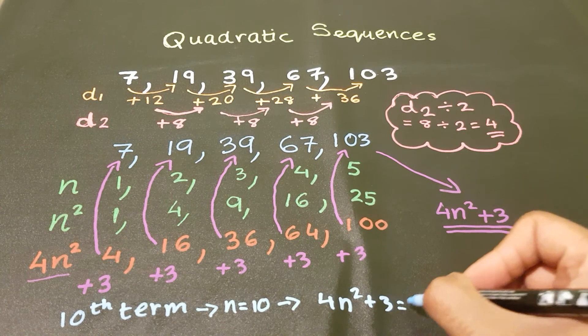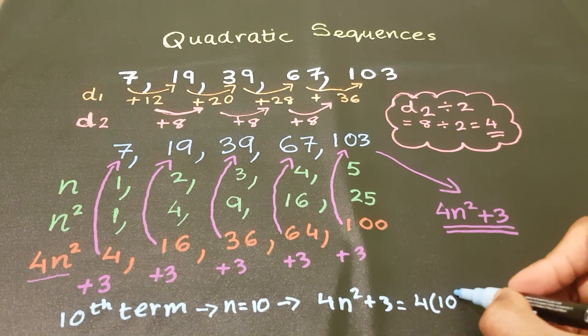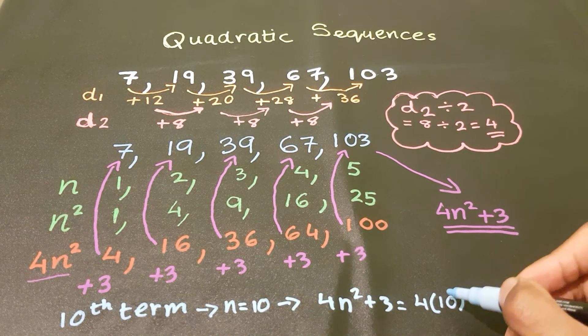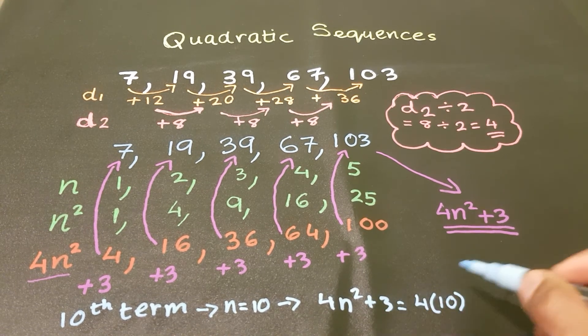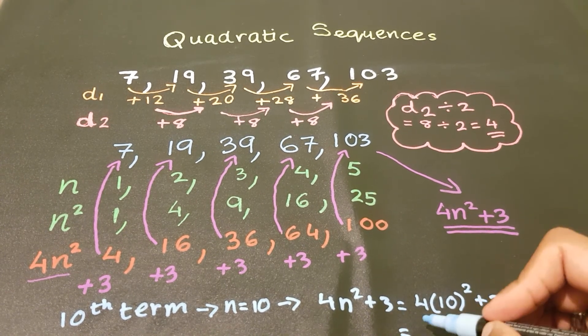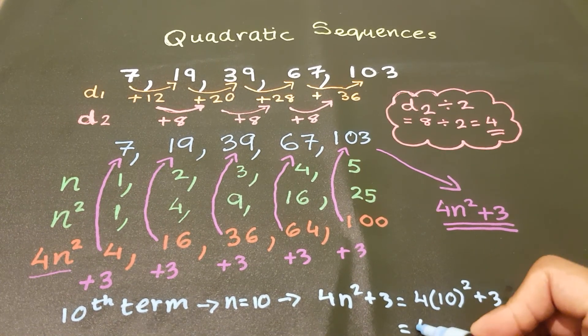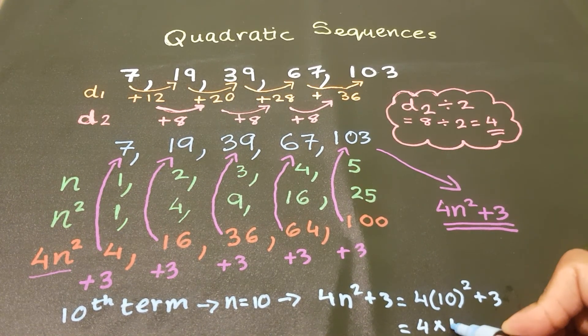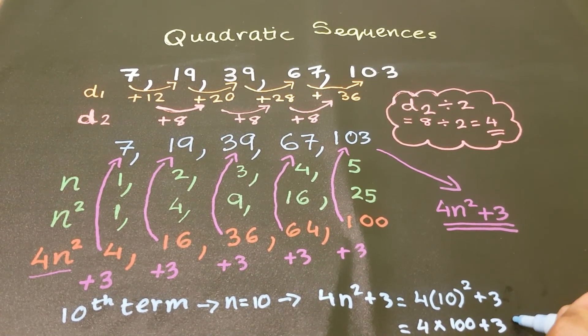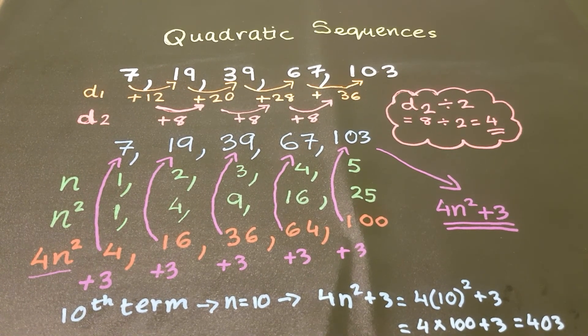So we go to our nth term, 4n squared plus 3. Which is 4 times, again, remember, whenever you substitute a number for a letter, make sure you place that number, get rid of the letter, place the number in brackets. 10 squared is 100. So we do 4 times 100 plus 3, which is 403. And that's how you find the 10th term.